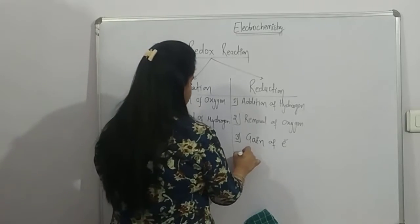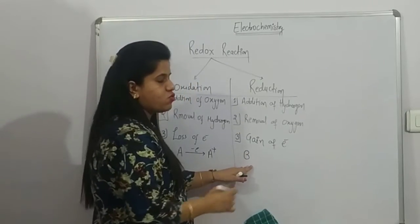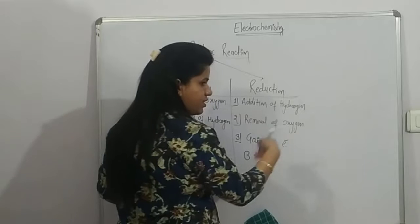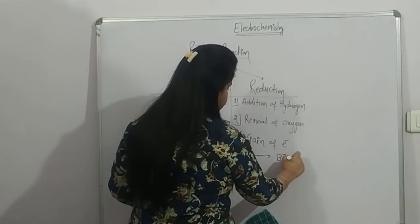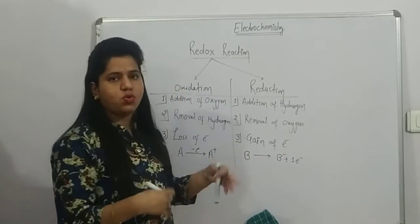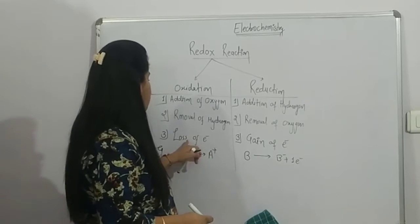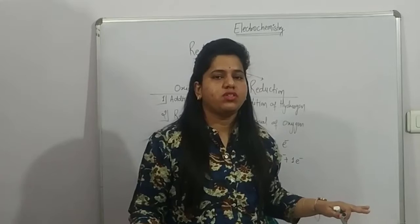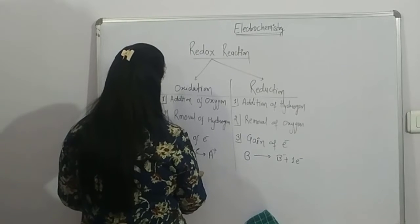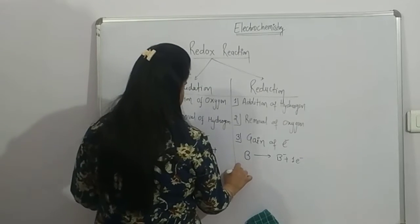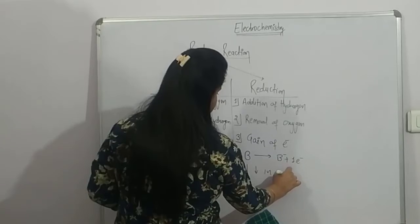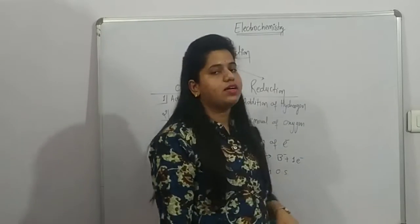If you don't have a clear concept of loss of electrons and gain of electrons, this chapter will not be clear. We can add one more point: increase in oxidation state is called oxidation, and decrease in oxidation state is called reduction. These are the key points.